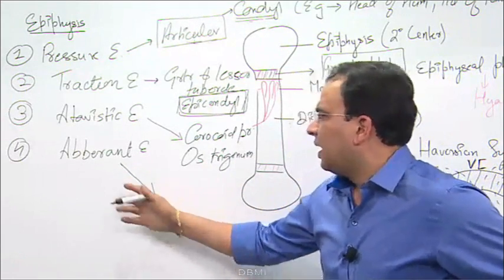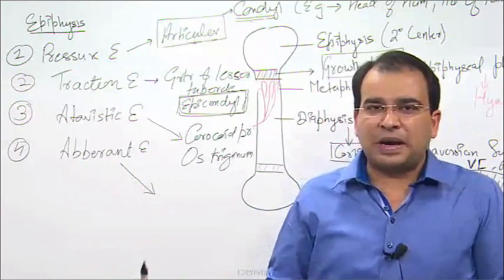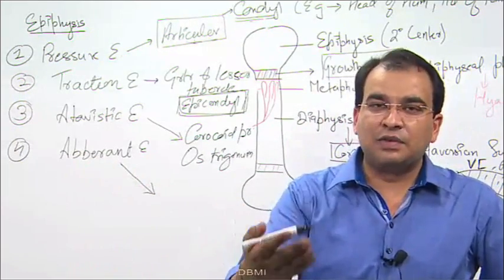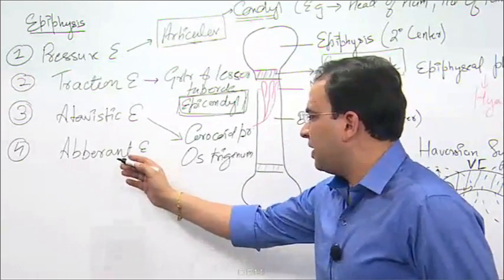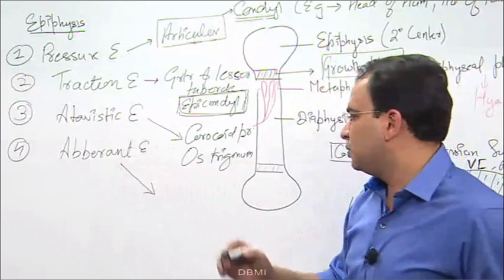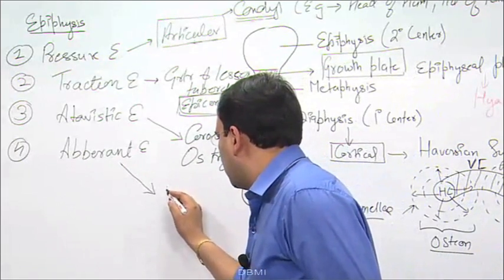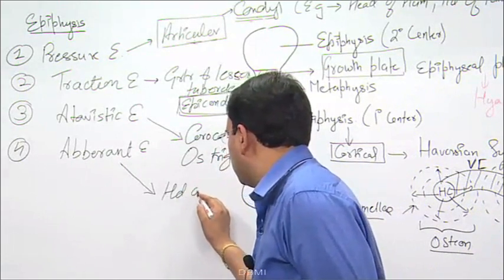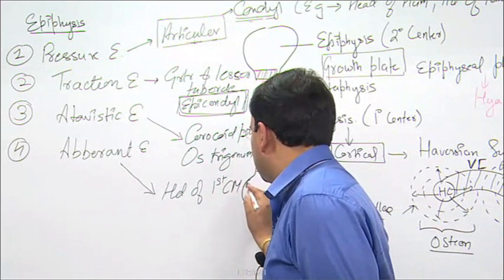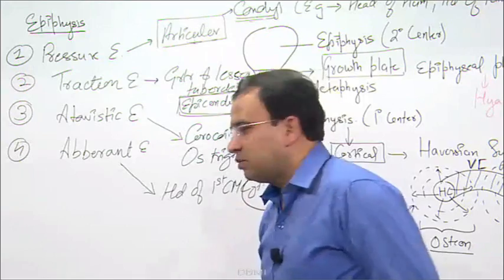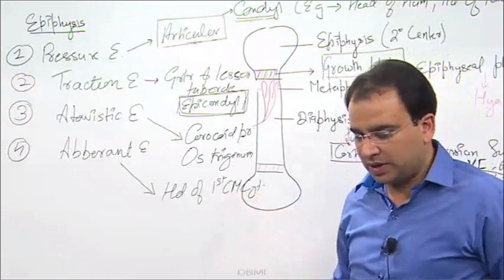Finally, we have aberrant epiphysis. As the name suggests, aberrant — we are not expecting an epiphysis in that region, and we still have it; that is the aberrant epiphysis. You find the aberrant epiphysis at the head of the first CMC joint. The CMC joint is the carpometacarpal joint — the first carpometacarpal joint.